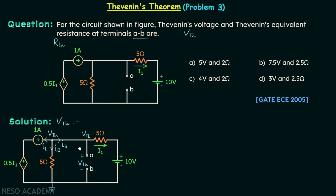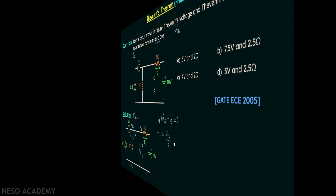I1 is equal to minus one ampere because we have a current source supplying one ampere in that direction. I2 is equal to Vth minus zero divided by five, so I2 equals Vth divided by five.